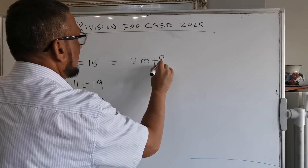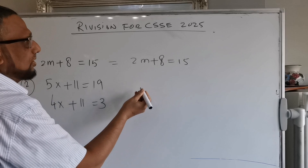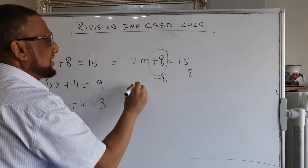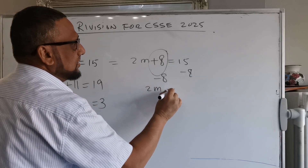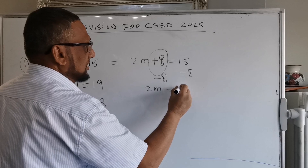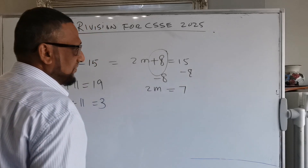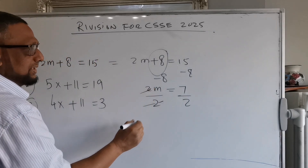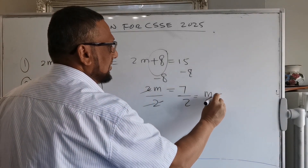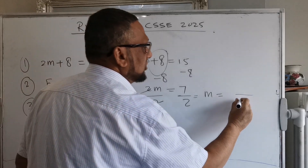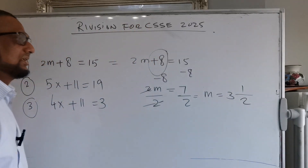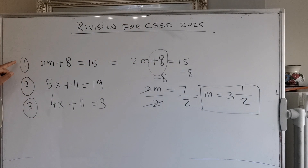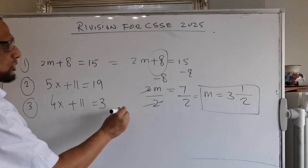So how do we solve 2m + 8 = 15? We subtract 8 from both sides: 2m = 15 − 8 = 7. So 2m = 7, which means m = 3 and a half. That's the value of m for question one.